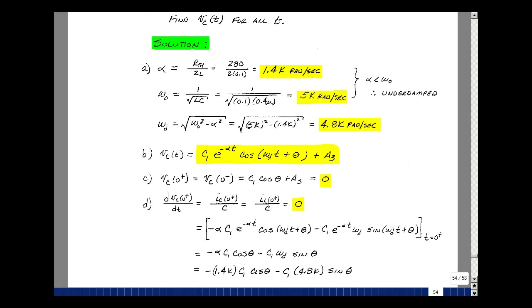So there's five unknowns here. Alpha and omega_d are determined by the component values in our circuit, and we already know those. And then we have three remaining unknowns, C1, theta, and A3. So we'll need three equations to solve for these three unknowns.